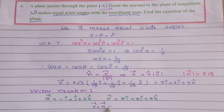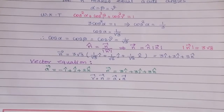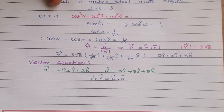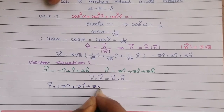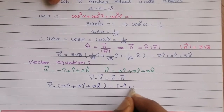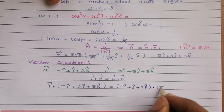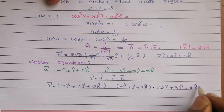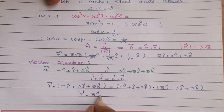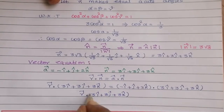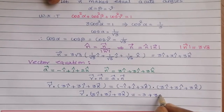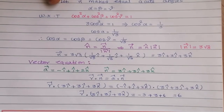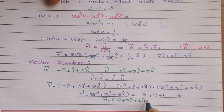The vector equation is r⃗ · n⃗ = a⃗ · n⃗. So r⃗ · (3î + 3ĵ + 3k̂) = (−î + ĵ + 2k̂) · (3î + 3ĵ + 3k̂) = −3 + 3 + 6 = 6. Therefore the vector equation is r⃗ · (3î + 3ĵ + 3k̂) = 6.